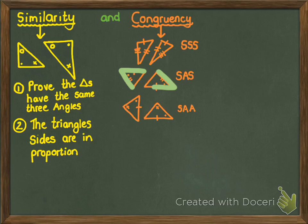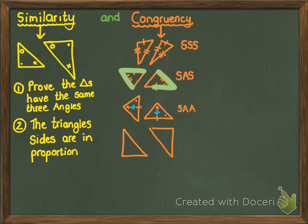Thirdly, you could do side, angle, angle. The catch here is that you have to always prove that the side is in the same position in both triangles — so the given equal side must be opposite the same angle in both triangles. And lastly, there's right angle, hypotenuse, side. So if you have a right angle and the hypotenuse are equal in each triangle, and a random other side is equal, your triangles are congruent.